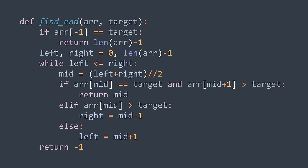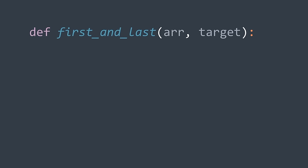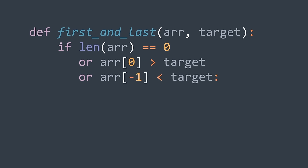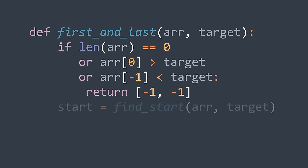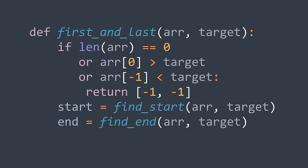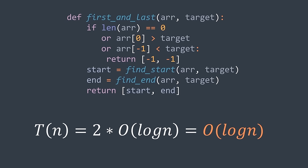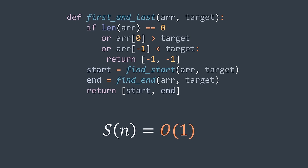Now we have find_start and find_end functions. In the main solution, we have early exit conditions: if the array is empty, if target is smaller than the first element, or if target is greater than the last element — return [-1, -1]. Otherwise, call find_start to get the start position and find_end to get the end position, then return [start, end]. If target doesn't exist, both functions will return -1. For time complexity, we use binary search twice — O(log n) each — giving O(log n). Space complexity is O(1) using only integer variables.